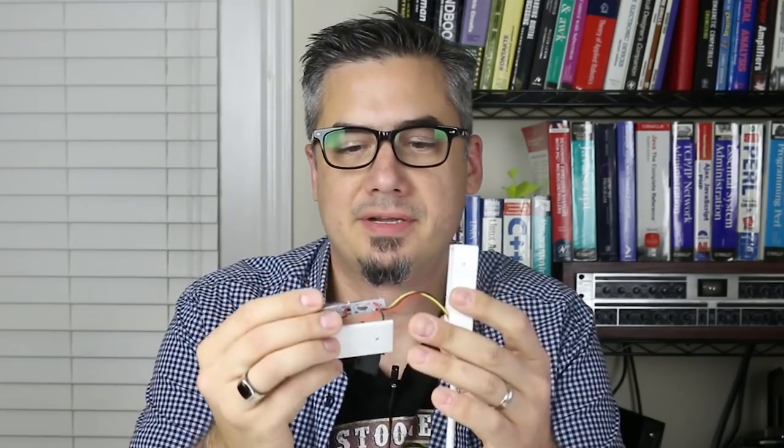So as we saw, the successive approximation register converts the voltage to a digital value within eight cycles, where the counter takes quite a bit longer than that and is somewhat unpredictable in its conversion time. Now I want to talk a little bit more about our project here, which I've just kind of soldered all the wires together. And I'll take you through how I designed this thing and some improvements I'd probably make. So come on closer and we'll put this thing together and explain a little bit more about how it works.